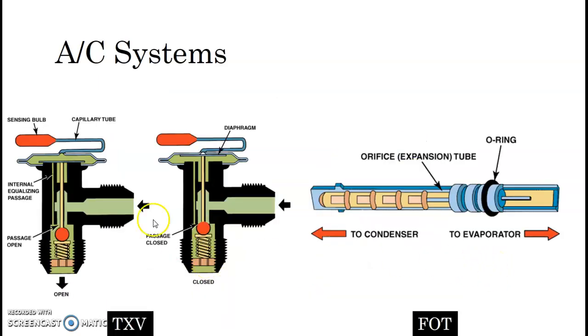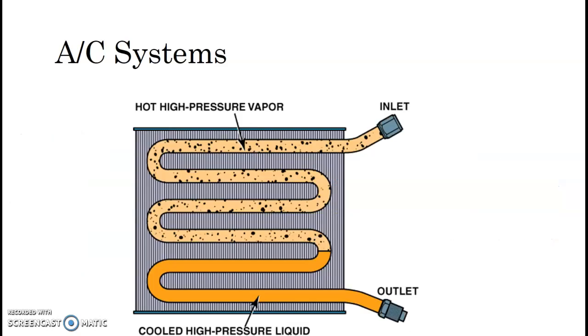Here's a couple of cutaways of the TXV and the fixed orifice tube. And again, I'm not going to go into too much detail. You hopefully remember engine's AC class. But here's a cutaway right here as it goes through the cooled, high-pressured liquid. You got hot, high-pressure vapor right here, inlet, and then it comes out of the condenser right here at high-pressure liquid.